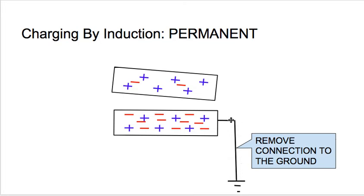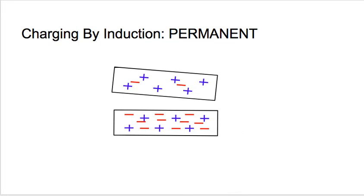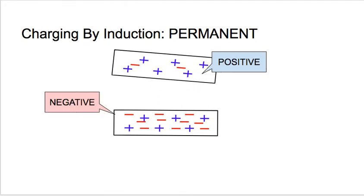If we again remove the connection to the ground and then remove the positively charged object, we're left with an object that has an overall negative charge. This is a permanent negative charge. So what we have here is a positively charged object and a negatively charged object — and there it is: charging by induction resulting in a permanent charge.